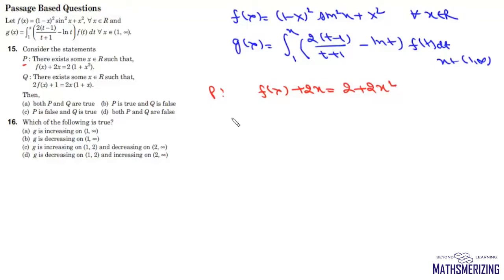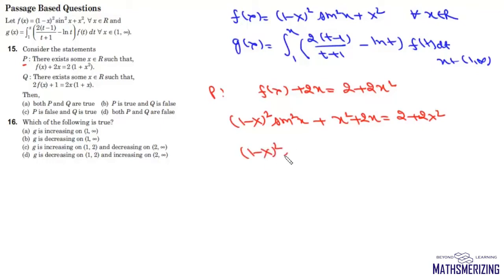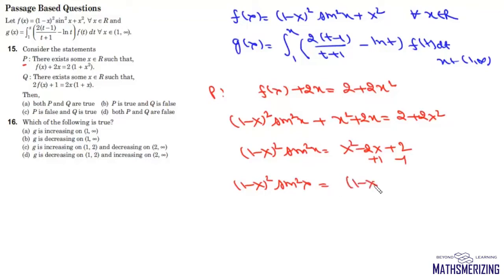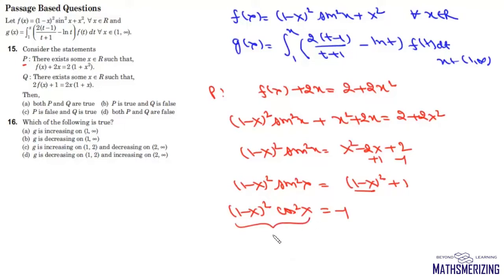We substitute the value of f(x): (1 minus x) squared into sin squared x plus x squared plus 2x equals 2 plus 2x squared. Rearranging, (1 minus x) squared times sin squared x equals x squared minus 2x plus 2. Adding and subtracting 1, this becomes (1 minus x) squared times sin squared x equals (1 minus x) whole square plus 1. Taking (1 minus x) squared common, (1 minus x) squared times cos squared x equals minus 1. Since this is a square of a number it is always greater than or equal to 0, and it can never equal minus 1.